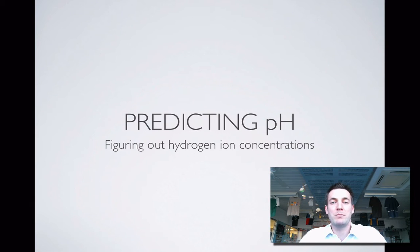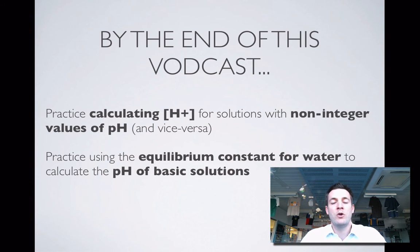Hello and welcome to this film about predicting pH. It's basically the year 12 version of the year 11 film. You might remember that in year 11 we dealt with integer values of pH only and nice simple powers of 10 for the H+ ion concentration. Now we're going to use our calculators.